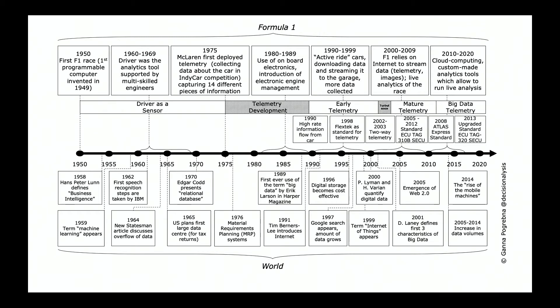In 1965, the U.S. basically published the plans of the first data science center for text returns. And in 1970, Edgar Codd presented the relational database. These were kind of the main stages of the so-called driver as a sensor era in Formula One - a time period when the driver was the main sensor, the main person who accumulated all the information about the car and translated this knowledge to the other parts of the team.